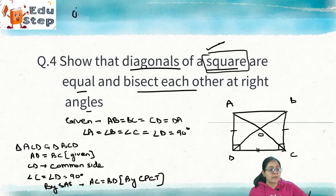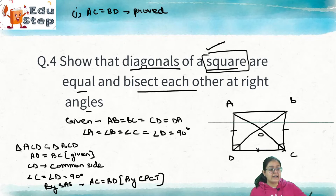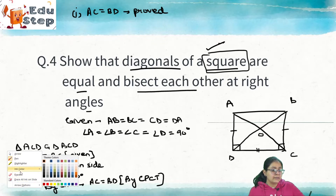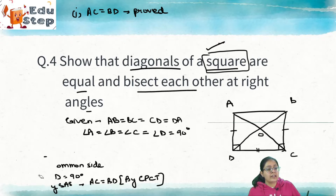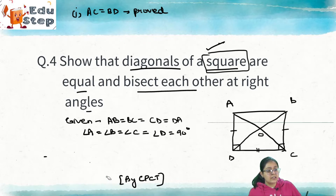For the second part, we have to prove AO = OC and BO = OD — that the diagonals bisect each other. For this we pick triangles AOB and COD.